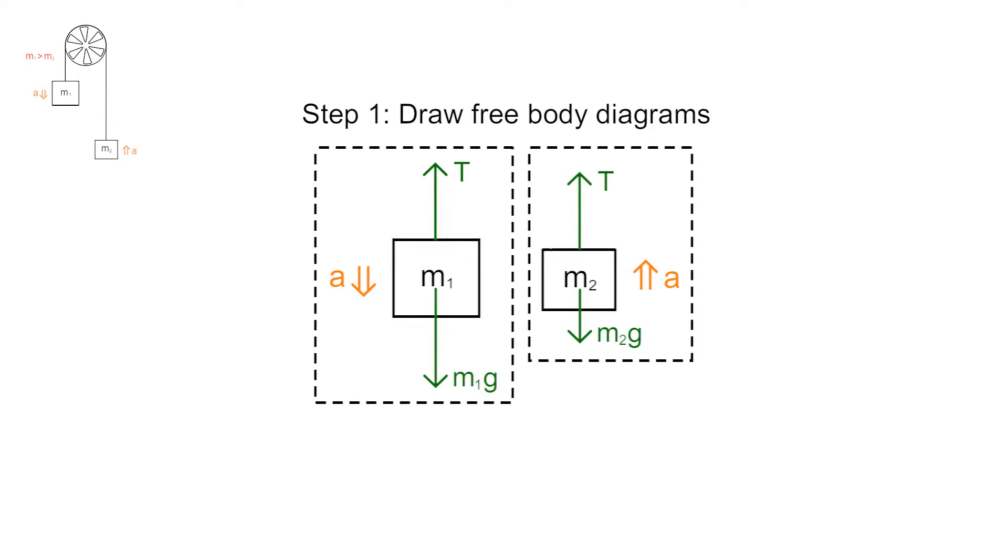We use the same tension force for both masses because frictionless-massless pulleys only redirect the tension force.